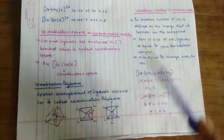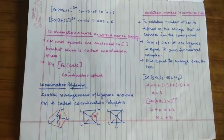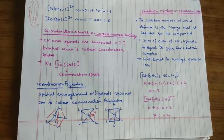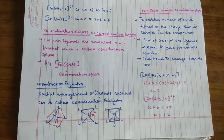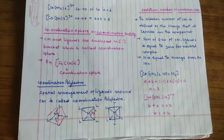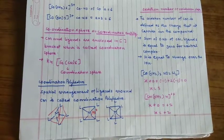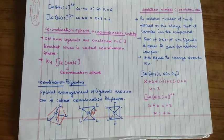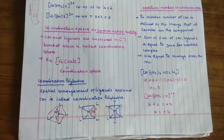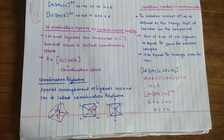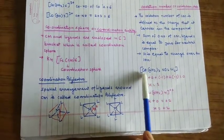अब एक term है oxidation number जिससे आप familiar हैं। Oxidation state, oxidation number of CM is defined as the charge that it carries in the compound। क्योंकि sum of oxidation number of CM and ligands is equal to 0 for the neutral complex and it is equal to the charge over the complex if the complex is ion.